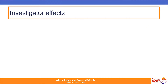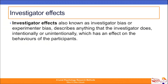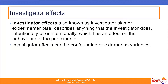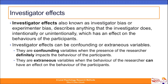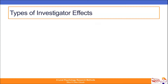Investigator effects, also known as investigator bias or experimental bias, describes anything that the investigator does intentionally or unintentionally which has an effect on the behaviours of the participants. Investigator effects can be confounding or extraneous variables. They are confounding variables when the researcher's presence definitely impacts participant behaviour, and extraneous variables when the researcher's behaviour can have an effect. There are different types of investigator effects.